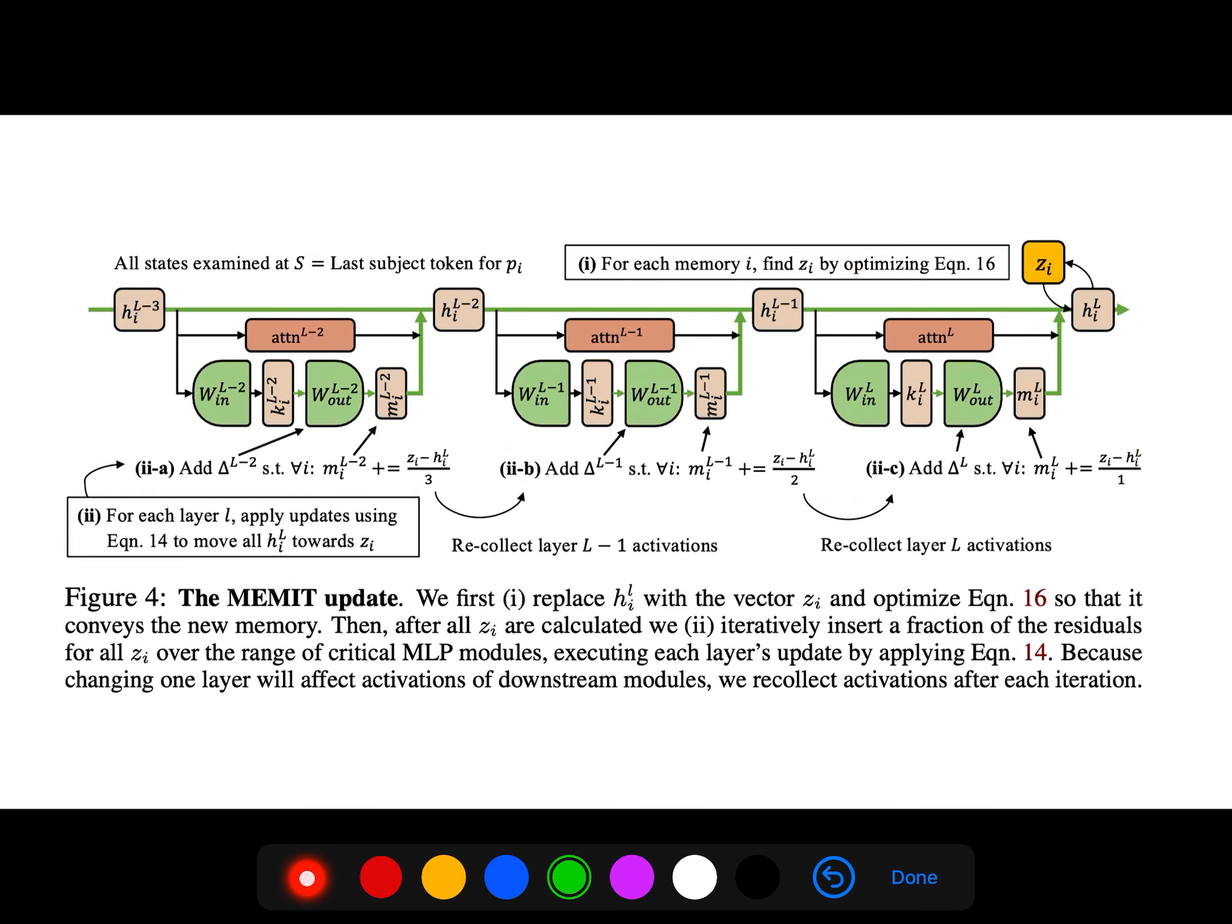You see that we first replace h with vector c and optimize equation 16 so that it conveys the new memory. Then after all z_i are calculated, we iteratively insert the fraction of residuals for all z_i over the range of critical MLP modules.